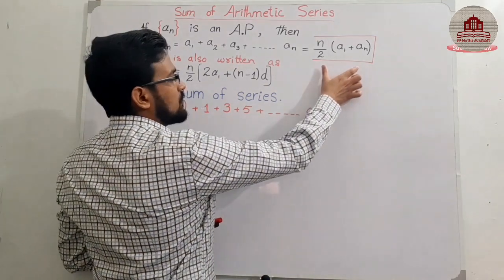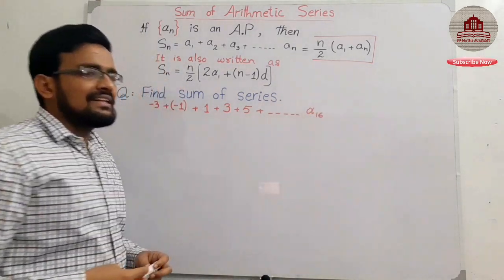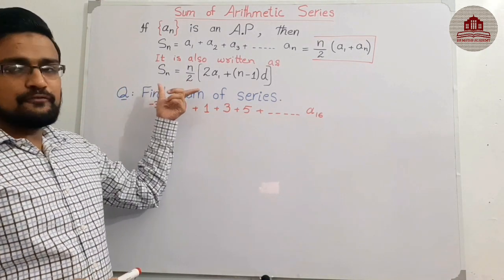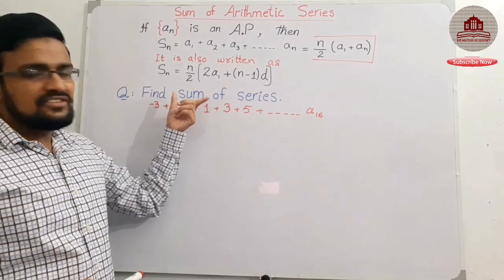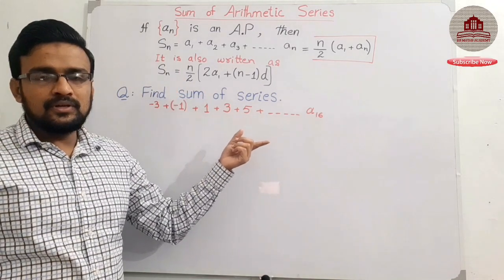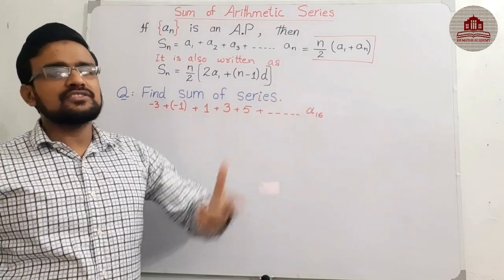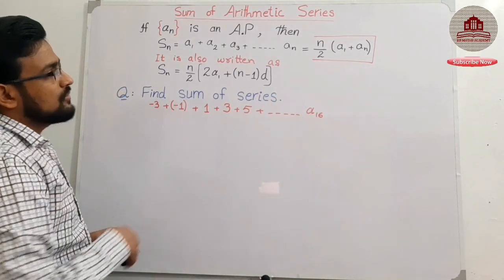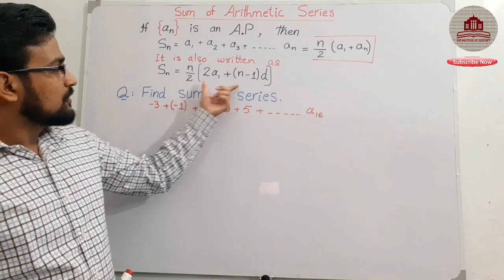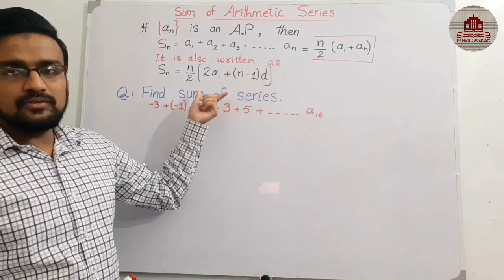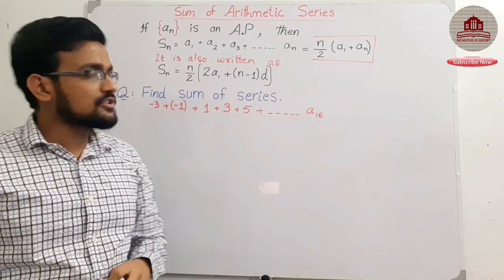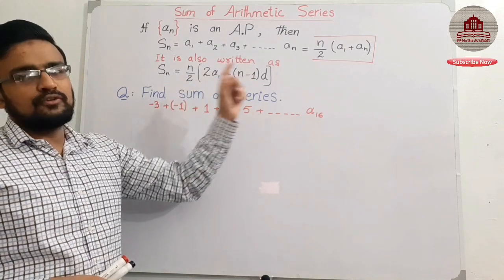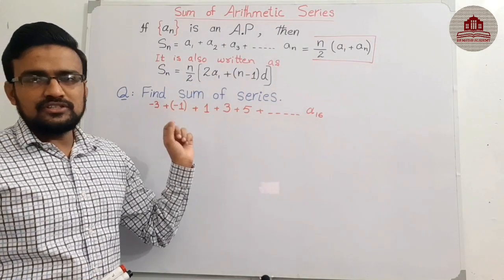The first formula is used when the first term and last term of the series are given. The second formula is used when the series is given but the value of the last term is not provided. Both formulas are for the sum of an arithmetic series, but their use is a little bit different from each other.